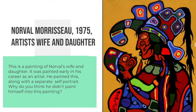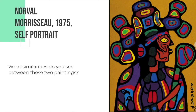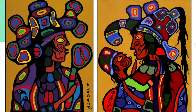Here is Norval Morisot's 1975 self-portrait. When I look at these two paintings I see a lot of similarities — how about you? Let's put them both side by side and think about what kind of similarities we see between these two paintings. On the left we have Norval Morisot's self-portrait and on the right we have Norval Morisot's wife and daughter.